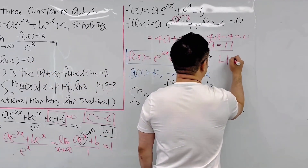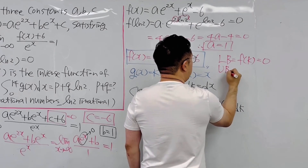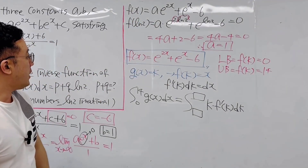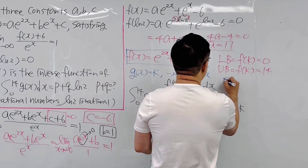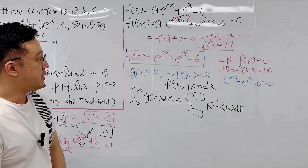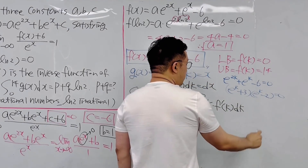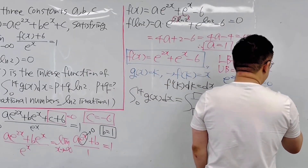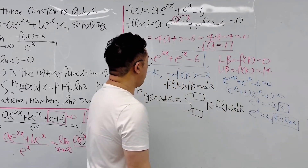The lower bound is when f of k equals 0. Using f of k equals e to the power of 2k plus e to the power of k minus 6 equals 0, this factors as e to the power of k plus 3 times e to the power of k minus 2 equals 0. So e to the power of k is either negative 3 or 2. Since e to the power of k can never be negative, e to the power of k equals 2, so k equals ln 2. The lower bound is ln 2.